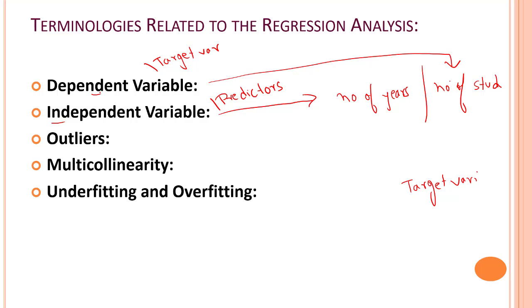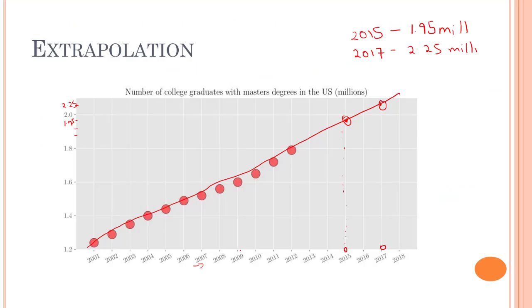Outlier is an observation which contains either very low or very high value in comparison to other observed values. Let's look at the previous example. Let's say for 2008, rather than having a data point over here, we have a data point in 2008 over here. And again on 2011, we might be having somewhere over here itself. We might have one more outlier.